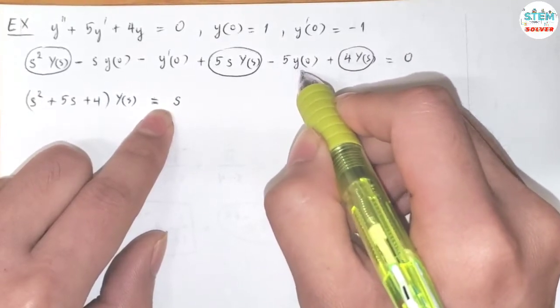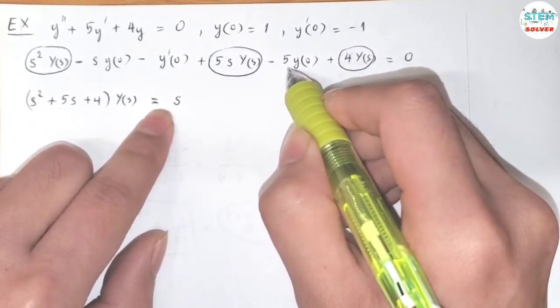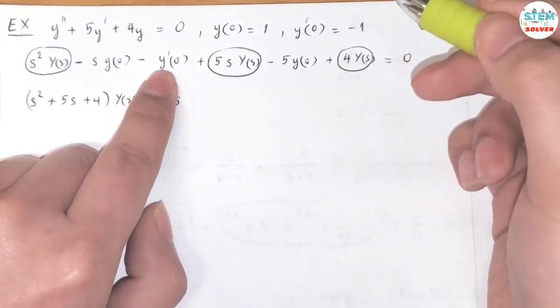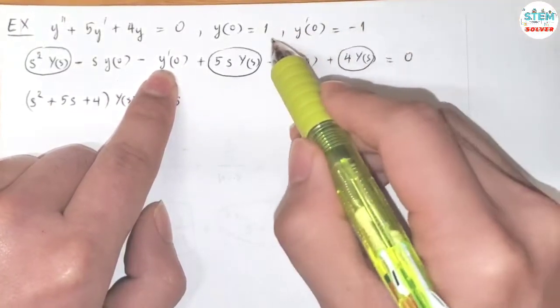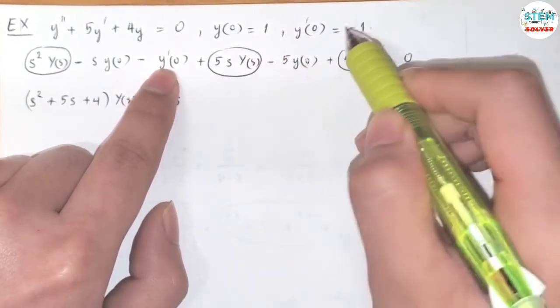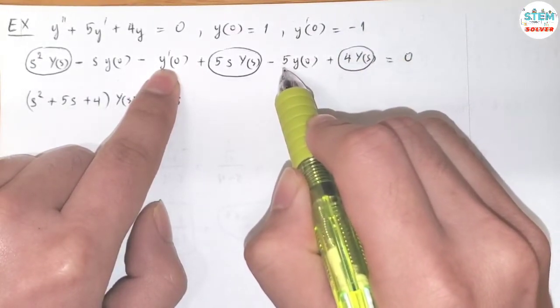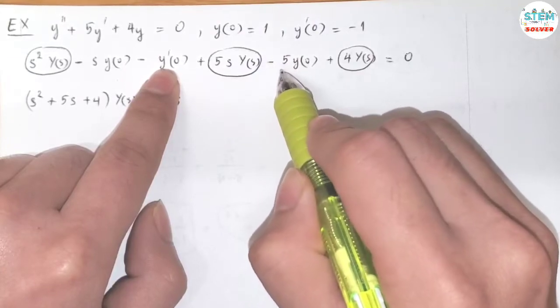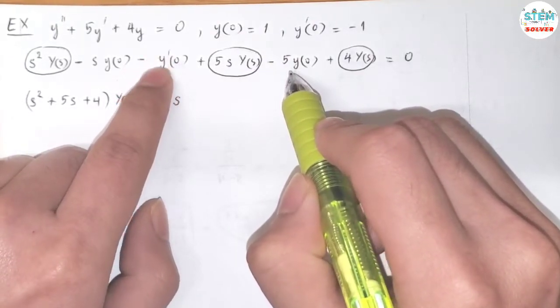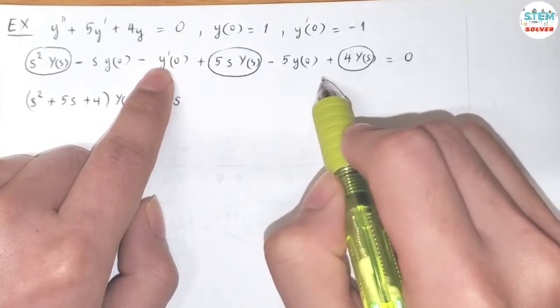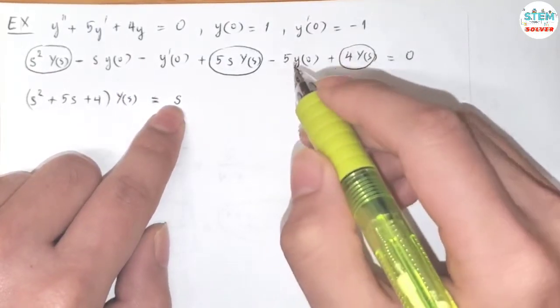So you have 6... you have negative negative 1, which is positive 1, minus negative 5 times 1, which is negative 5, so you have negative 4. Move to the other side, which is positive 4.